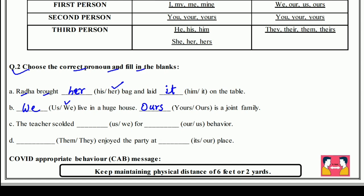फिर: The teachers called us — teacher ने हमको डाँटा — इसलिए 'us' आएगा, 'we' नहीं — for our behavior — हमारे behavior के लिए। और: They enjoyed the party — यानि उन्होंने party enjoy की — 'they' आएगा क्योंकि वे party enjoy कर रहे थे। At our place — हमारे place पर।